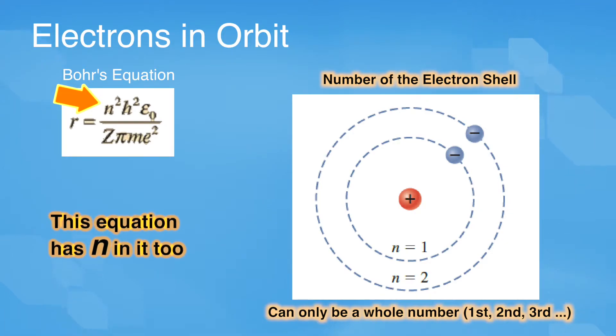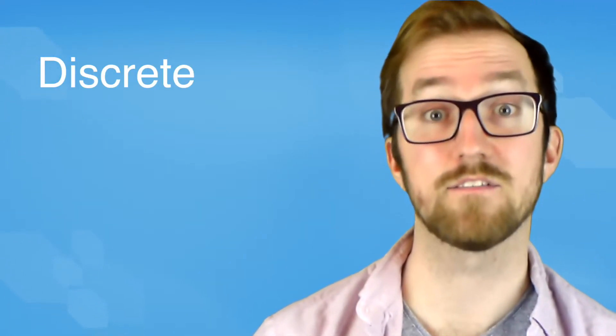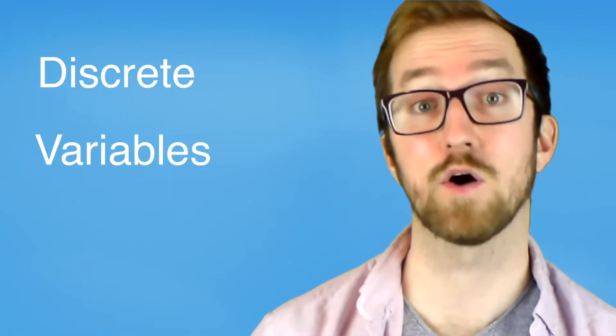Well, these shells are at specific places. You can't have an electron be between shells. No electron part in one shell, or part in another. Either it's in this shell, or it's in that shell. I feel like I'm having deja vu. So basically, the only two things in all of physics that had discrete variables in their equations were these standing waves and these electron orbits.